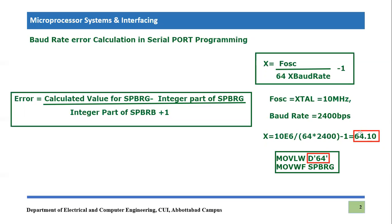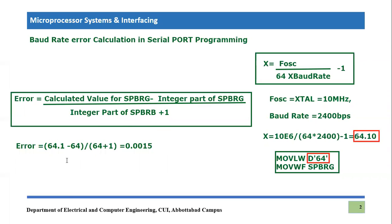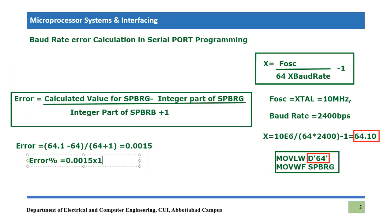So there is some error, and if we are interested to calculate that error, we substitute these values in the formula. The calculated value is 64.1 and the integer part is 64. So: 64.1 minus 64, divided by the integer part plus one, which is 64 plus 1, giving us 65 in the denominator. If we calculate this value, it becomes 0.0015.